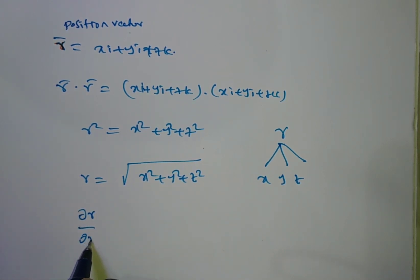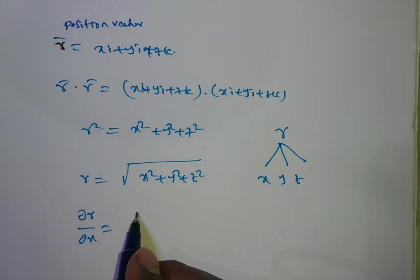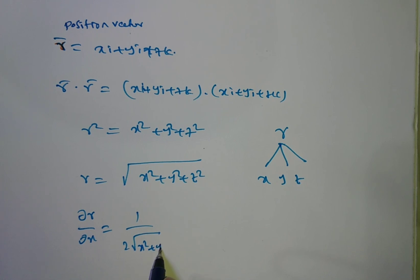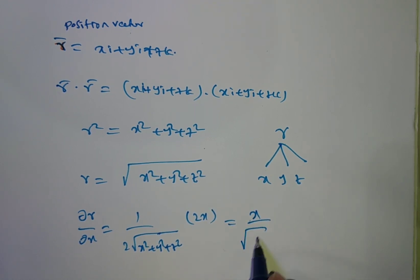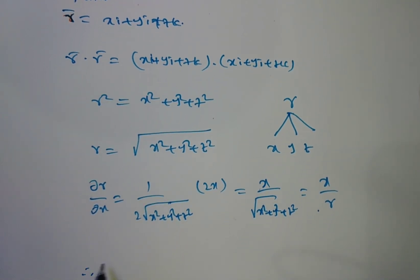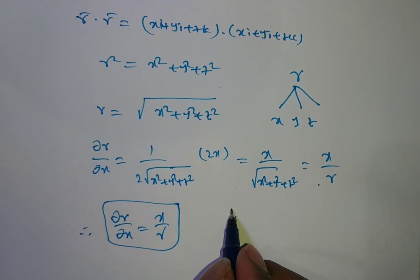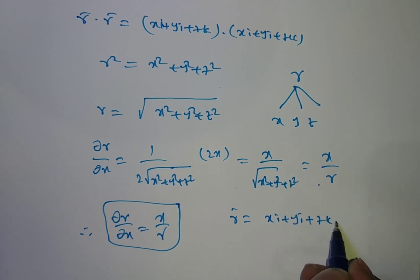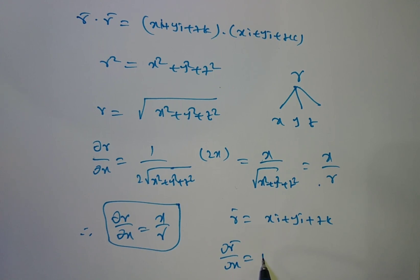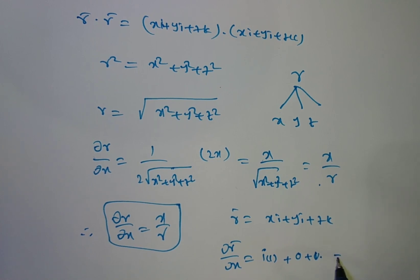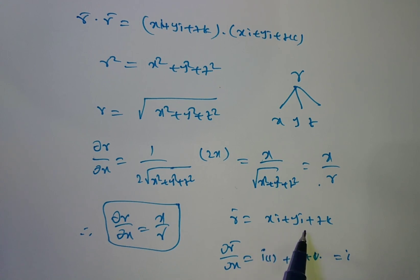∂r/∂x: using the chain rule, this is (1/2√(x²+y²+z²)) · 2x, the twos cancel, giving x/√(x²+y²+z²) = x/r. So ∂r/∂x = x/r. Also, since r̄ = xi + yj + zk, then ∂r̄/∂x = i, ∂r̄/∂y = j, and ∂r̄/∂z = k. These values you have to remember.